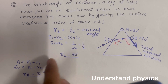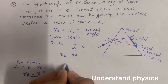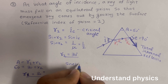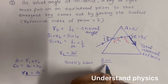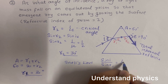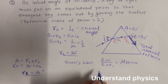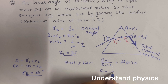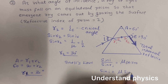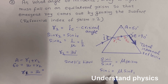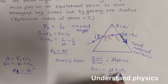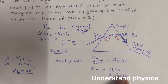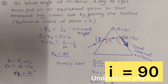Applying Snell's law at the first surface: sine i divided by sine r1 equals the refractive index of the prism. So sine i equals mu times sine r1. Here mu is 2 and r1 is 30 degrees. Substituting sine 30, we get the angle of incidence for this problem.